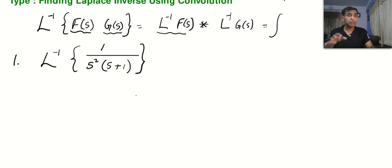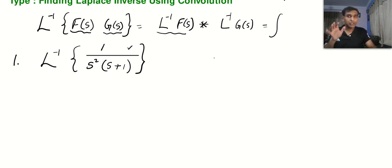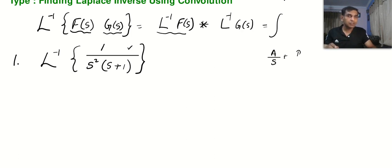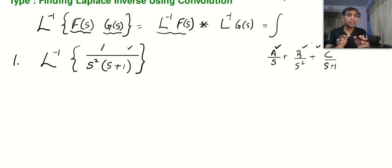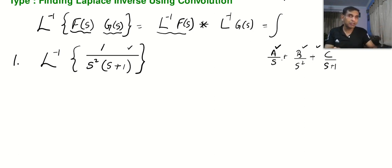Those who watched the last video on partial fractions might be thinking, why am I keeping this question again? In the last video, we learned we can tackle this problem with partial fractions. But for students who are good in integration, the convolution method will be even faster. In partial fraction, this is clearly type 2, written as a/s plus b/s² plus c/(s+1). But if the exam mentions 'using convolution, evaluate,' you cannot use partial fractions — you have to use this method.